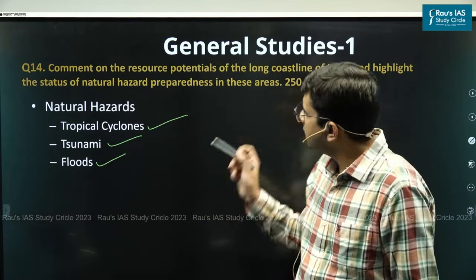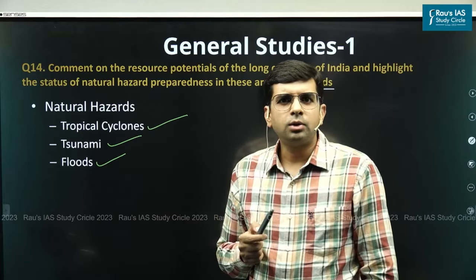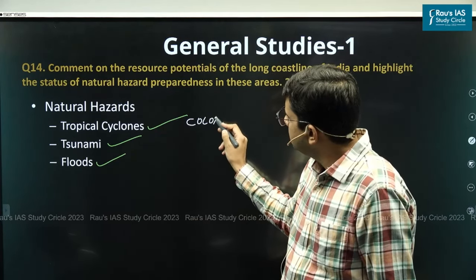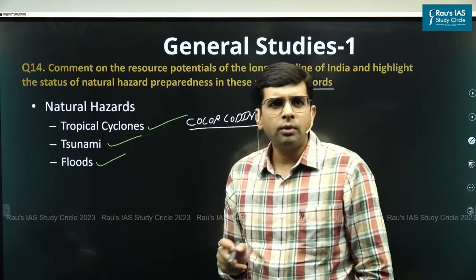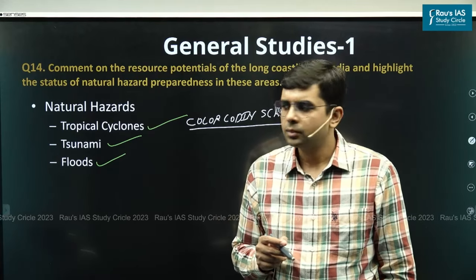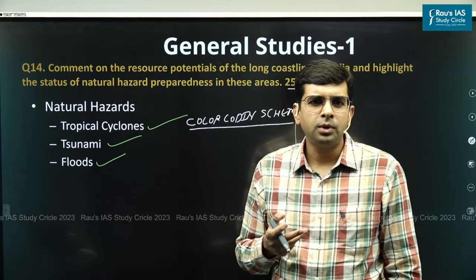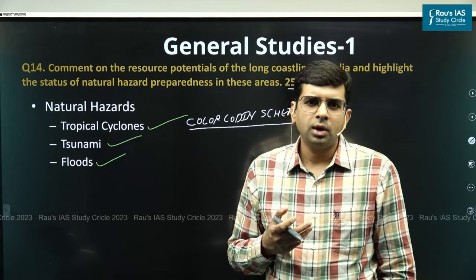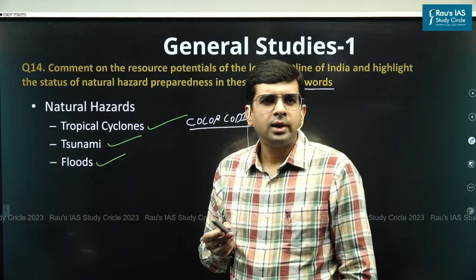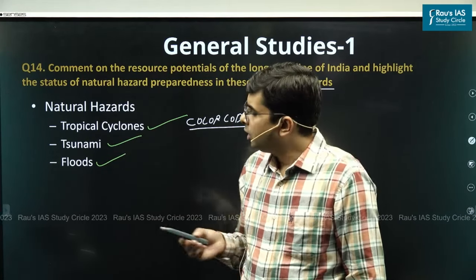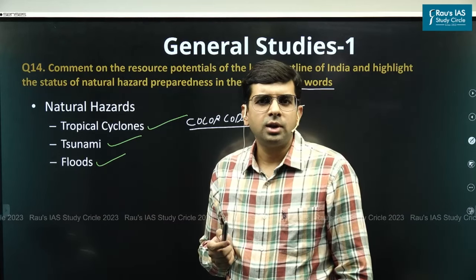Given the 250-word limit, we mention briefly: for tropical cyclones, India has developed a colour-coding scheme connected to disseminating warnings of incoming cyclones to coastal populations. India has also adopted the Doppler weather radar system, which enhances the capability to track and predict cyclone development beforehand. Early warning systems for tsunami have already been installed. Additionally, the interlinking of rivers approach is being adopted to reduce the possibility of floods in coastal areas.